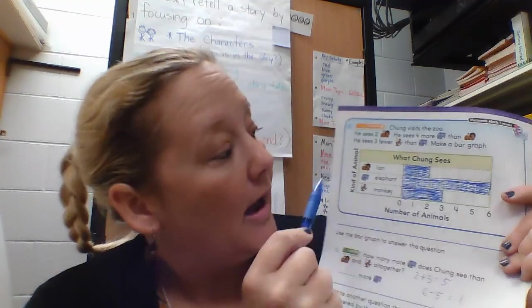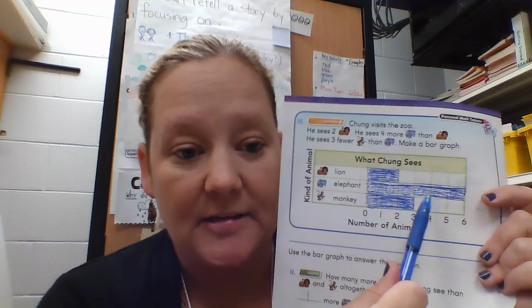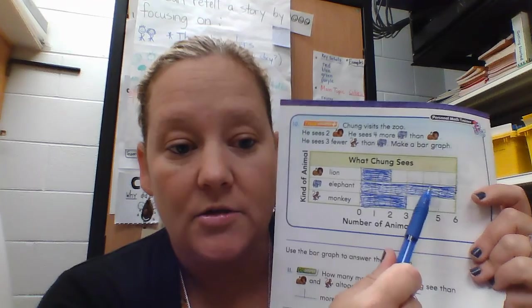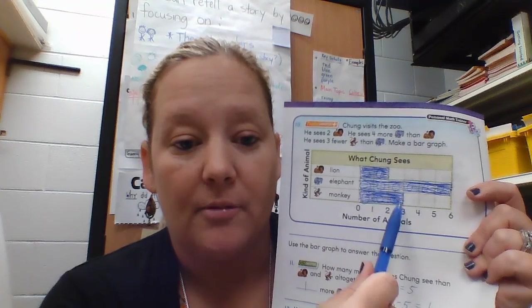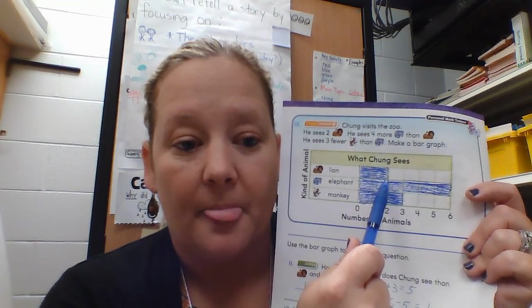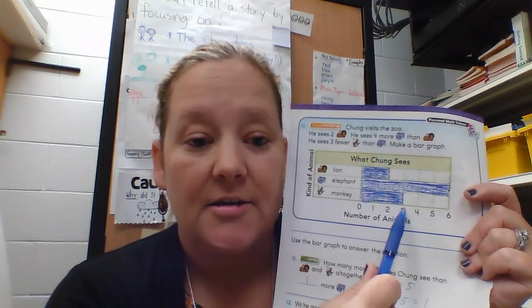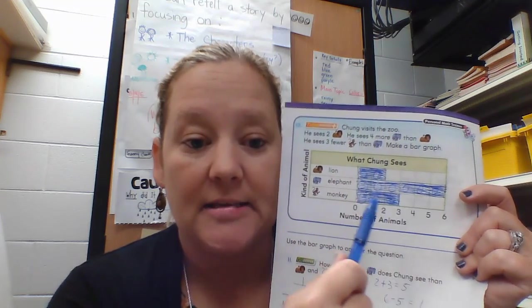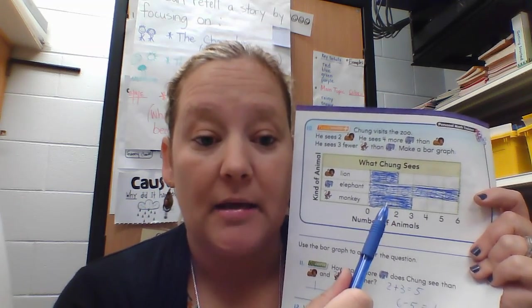The lions are two, the elephants are four more, which is six. Now it says he sees three fewer monkeys than elephants, so if I look at how many elephants there are, I take three away: one, two, three — and the monkeys are three. There are two lions, six elephants which is four more than two, and three monkeys which is three less than six. Remember: more means you add, less than means smaller, you take away.